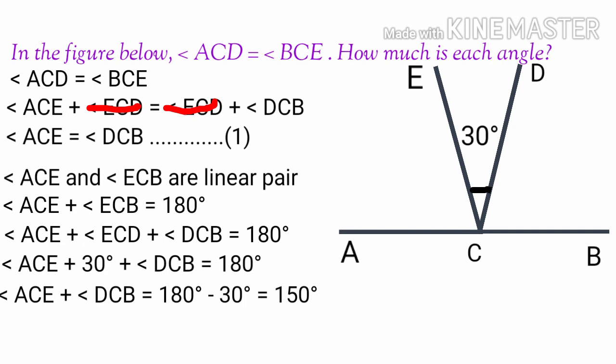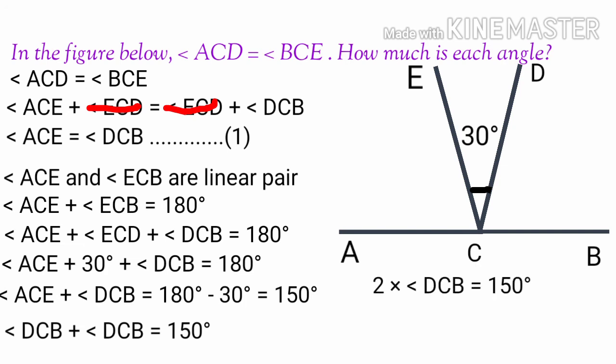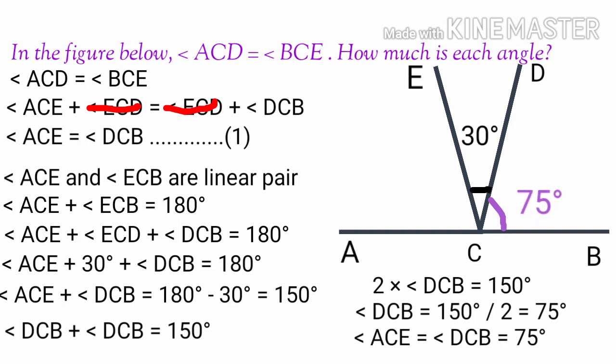Since angle ACE is equal to angle DCB, we have 2 times angle DCB is equal to 150 degrees. Therefore, angle DCB is equal to 150 divided by 2, which is equal to 75 degrees. Therefore, angle ACE is equal to angle DCB, and each is equal to 75 degrees.